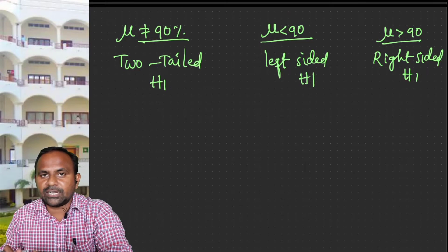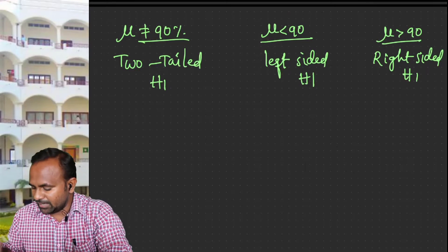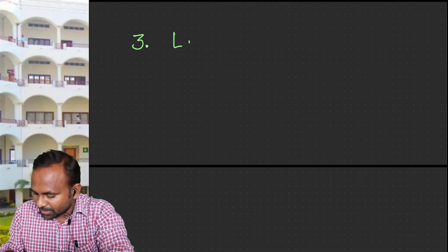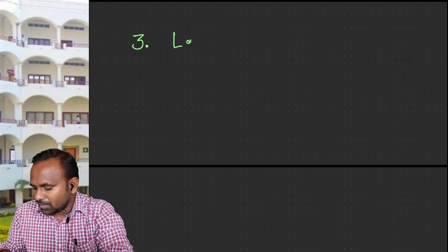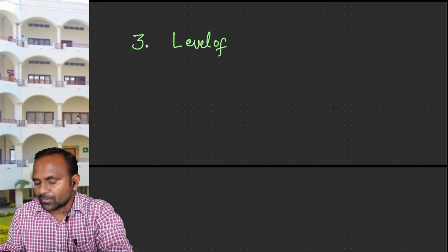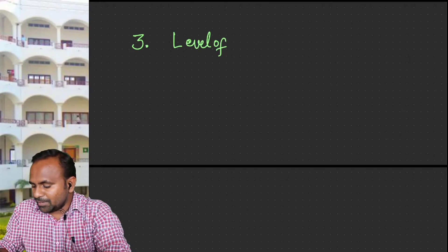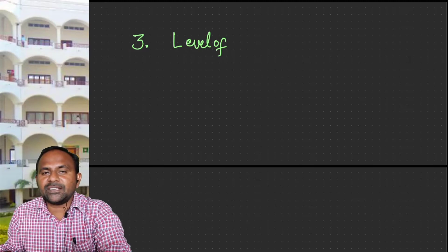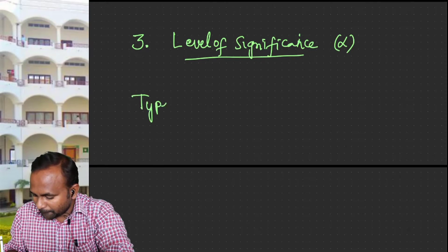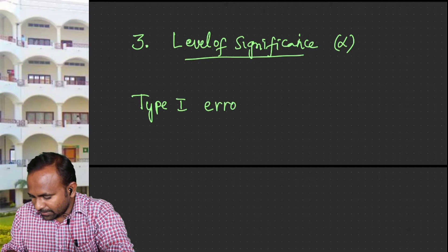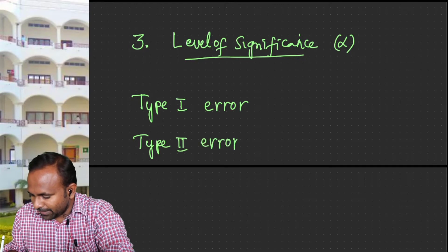Let us come back to the alternative hypothesis whenever we are dealing with critical regions. For now, the third concept is level of significance. Level of significance is denoted with alpha and is the probability of committing a Type 1 error. We need to deal with two types of errors here: Type 1 error and Type 2 error. These are the two basic things you have to know to define what the level of significance is.